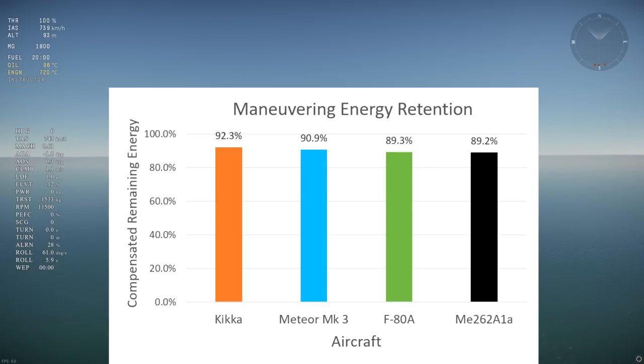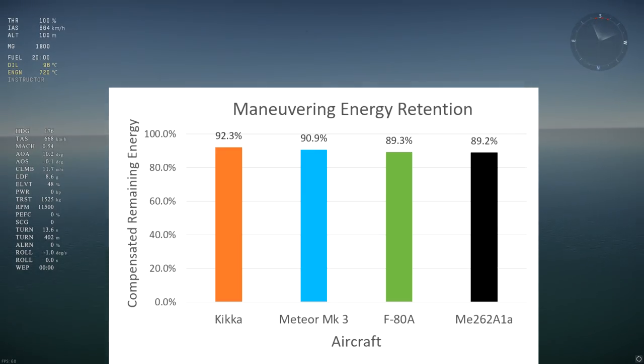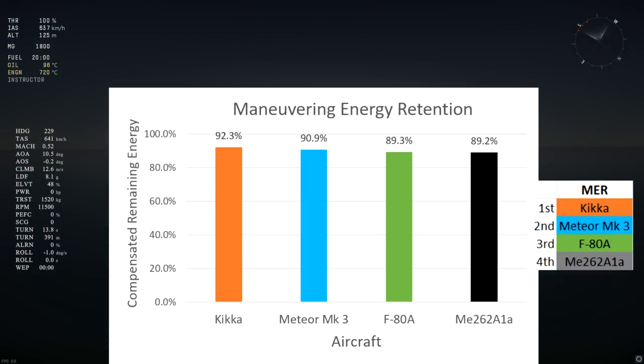The aircraft are ordered in descending order for the most energy conserved. The Kika conserves 92.3% of its energy after a 90 degree turn, followed by the Meteor, the F-80, and then the ME262 close behind.